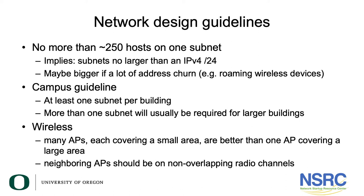In a campus environment, the guideline is you need at least one subnet per building: if it's a building, it has its own fiber connection and its own subnet. If a building has more than 250 devices, you'll need more than one subnet — dividing by floors, wings, staff versus computer labs, or multiple subnets for a large computer lab. The goal remains no more than 250 hosts per subnet, with a separate subnet for every building.